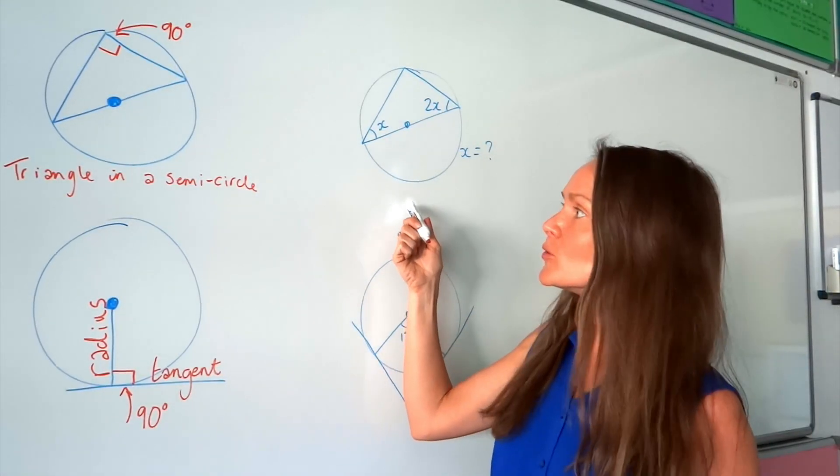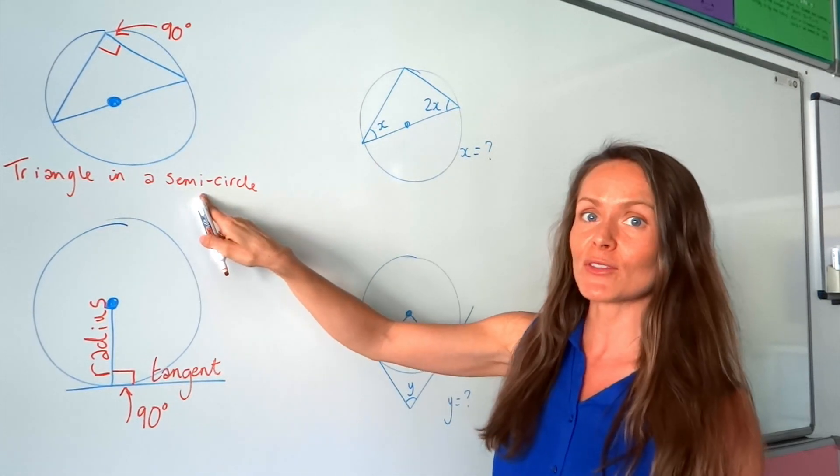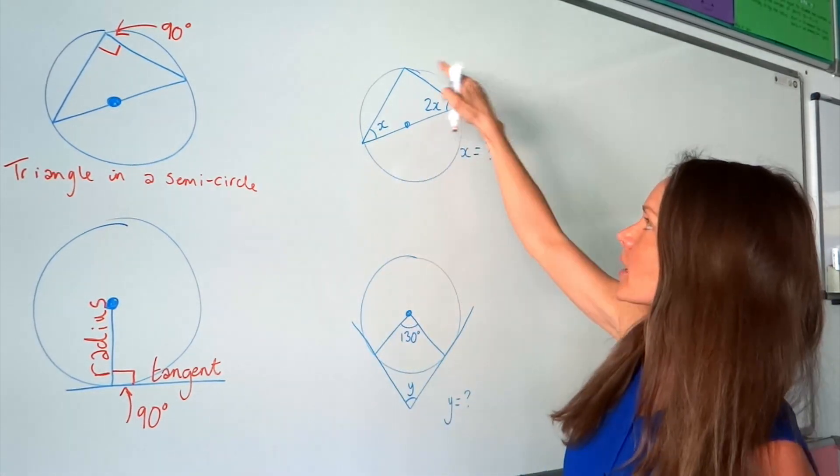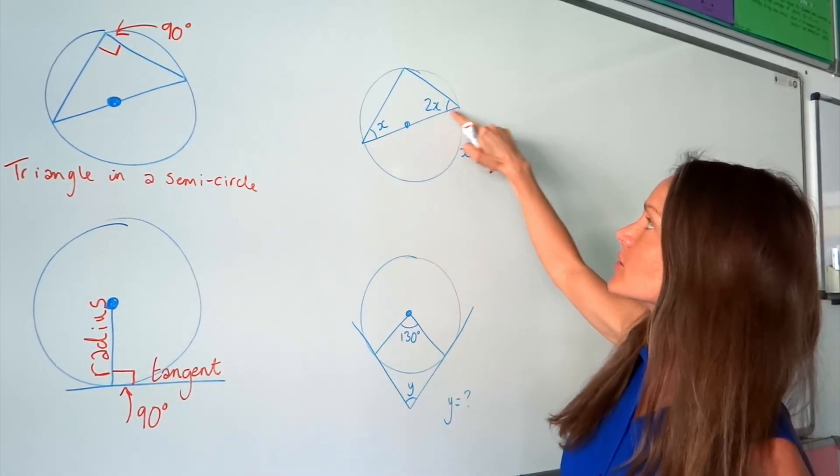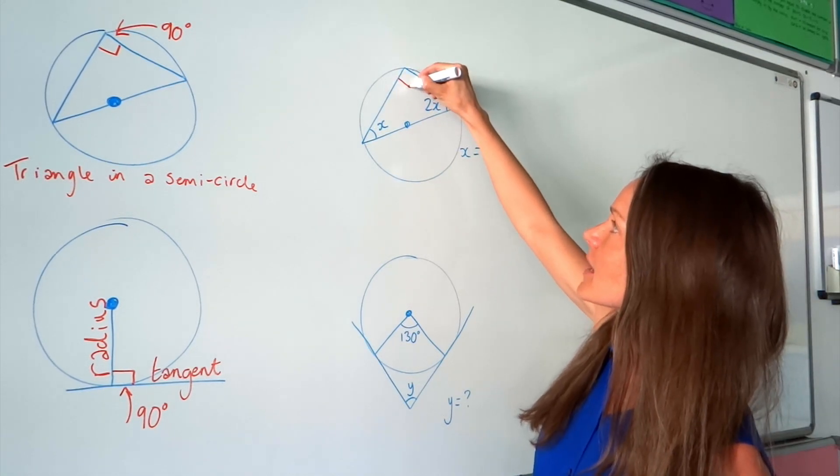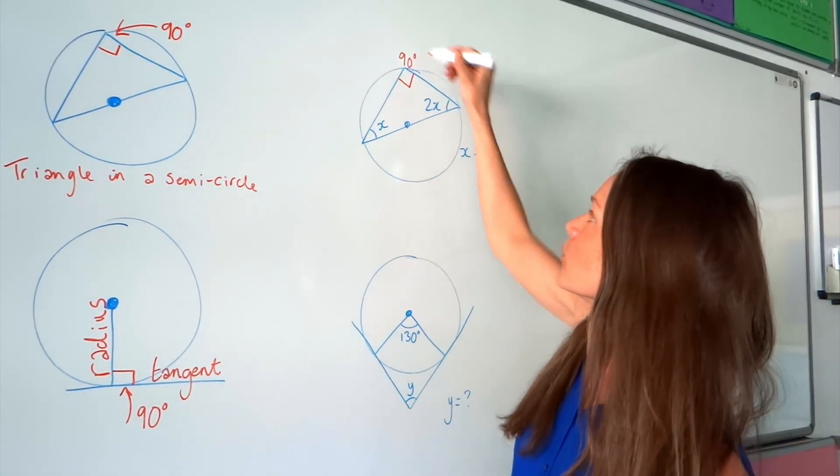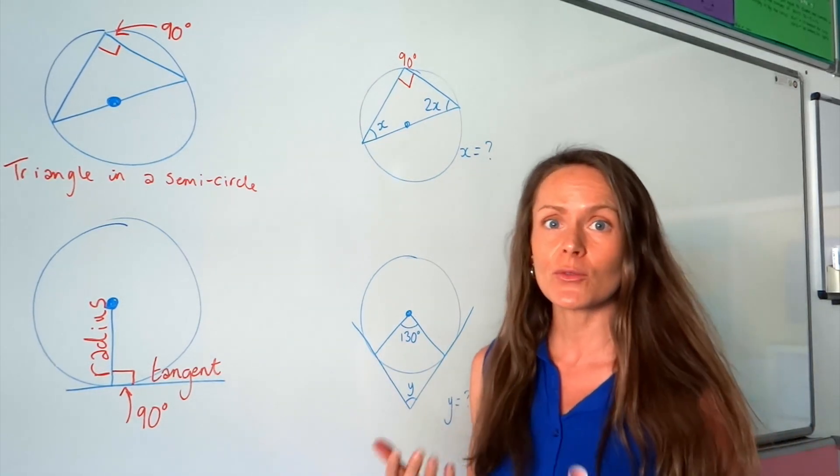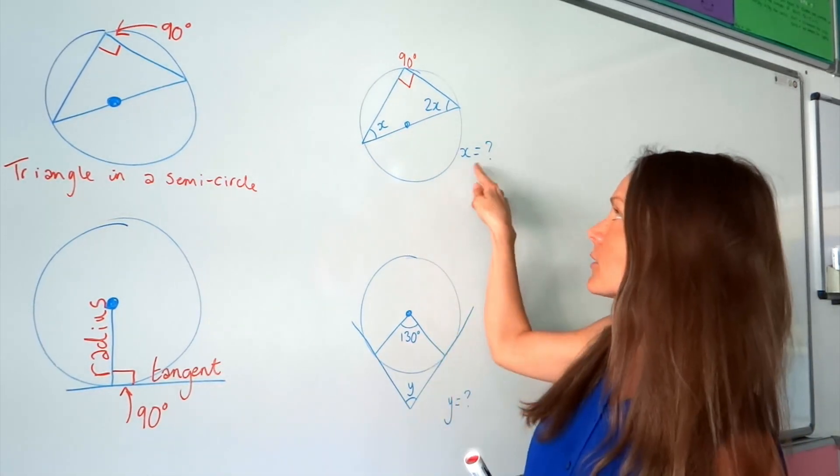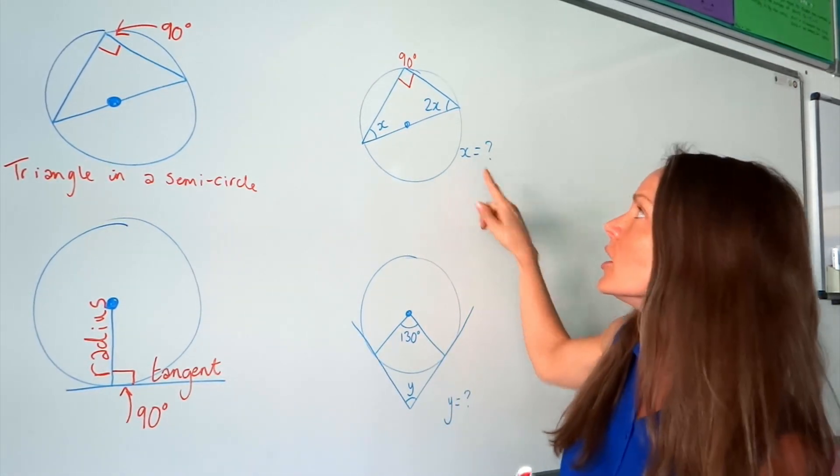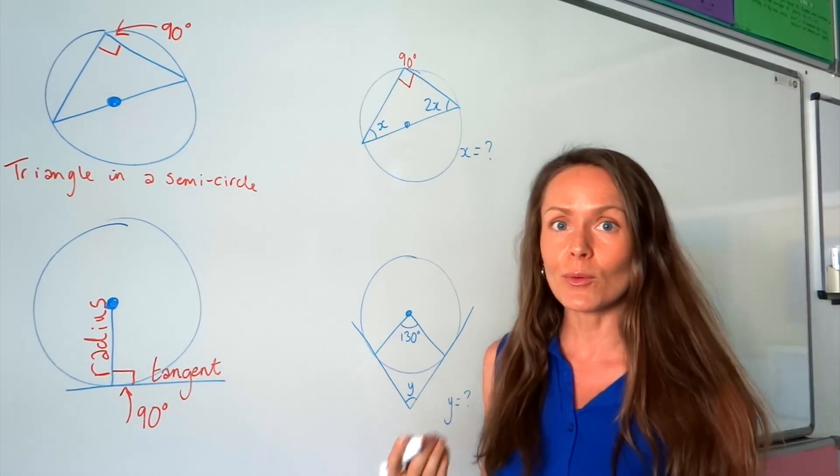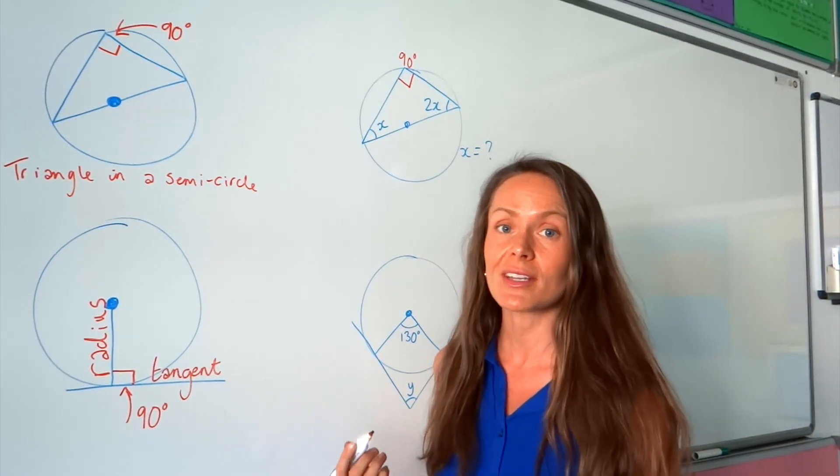So, in this next example here, I'm using triangle in a semicircle again. You can see there's a triangle in half a circle. This is the diameter. Which means this angle at the top is 90 degrees. Now, we need to use algebra and we need to form an equation in order to work out the value of X in this question. We know that in a triangle, all the angles add up to 180 degrees.